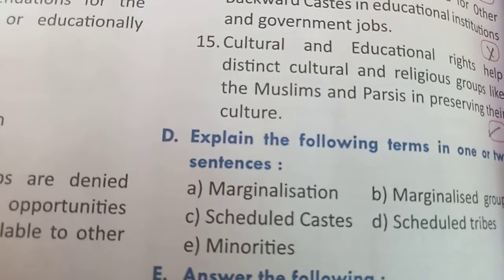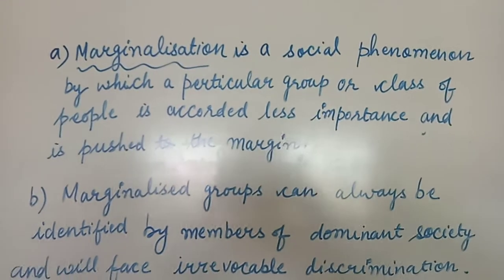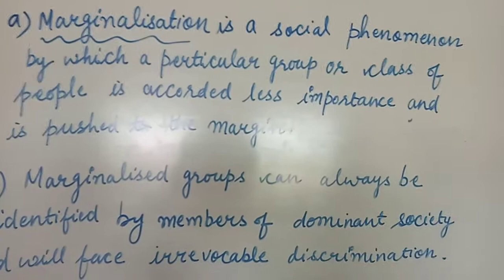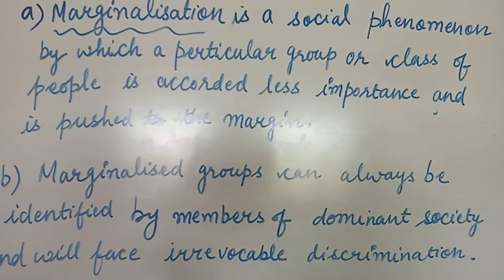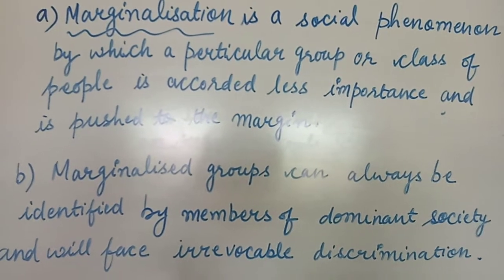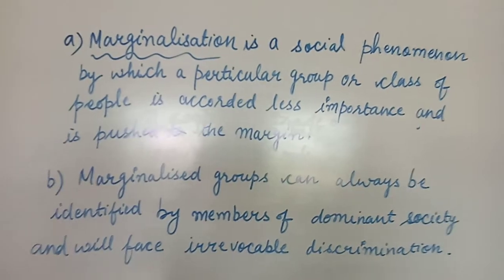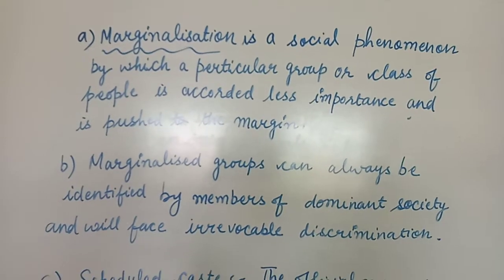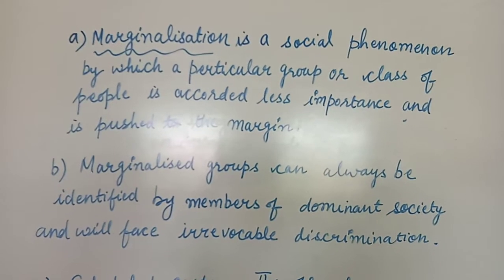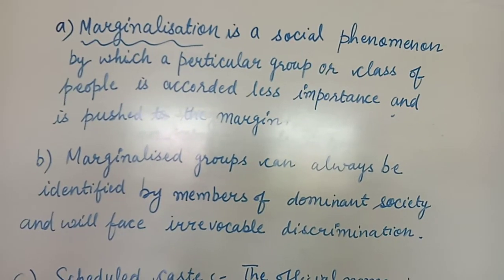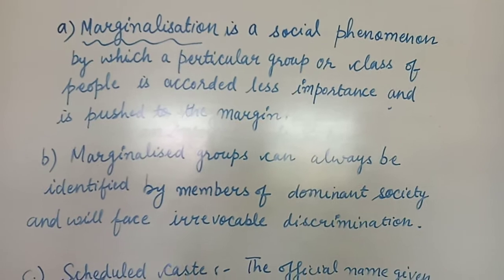The answer for term A, marginalization: marginalization is a social phenomenon by which a particular group or class of people is accorded less importance and pushed to the margin. For term B, marginalized groups: marginalized groups can always be identified by members of a dominant society and will face irrevocable discrimination.